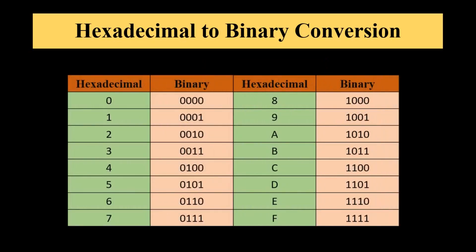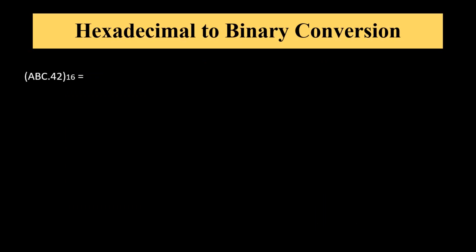Now we take an example of hexadecimal number and convert it to binary number. ABC0.42. This is a hexadecimal number and we have to convert it to binary number.